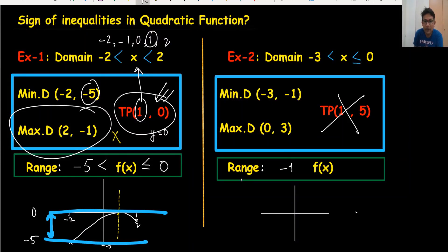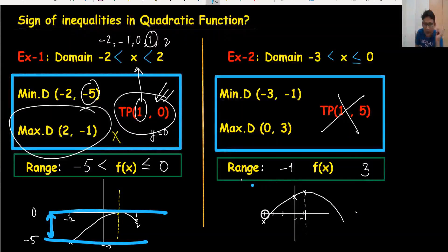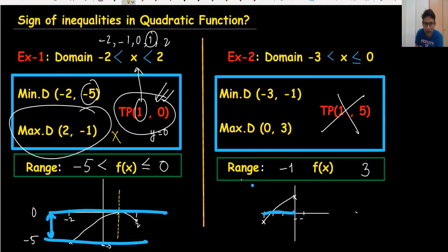We find the range from two values: minus three gives minus one, and zero gives three. So I write minus one and three. Drawing the sketch: the domain is from minus three to zero, so I only use that portion of the curve. The minimum value is minus one and the maximum value is three.